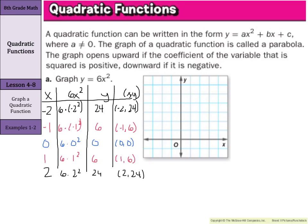With 0, 0 at the origin, we plot our points: 1, 6 and negative 1, 6 are near the middle, and we can't quite fit negative 2, 24 and 2, 24 on this graph, and that's okay — we still put them in the table. As we draw this, it's a U-shape, so we want to make sure we draw a smooth U and not something with straight lines. This is the graph of y equals 6x squared.